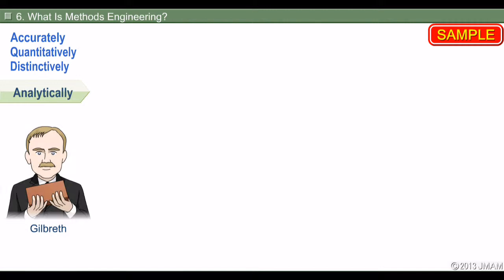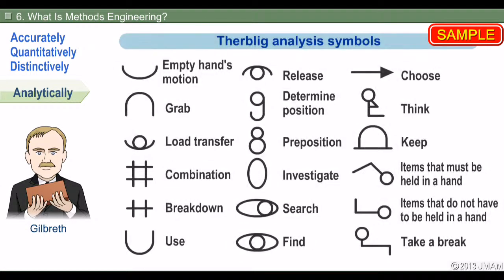Gilbreath broke down the entire bricklaying work into 18 motions. Seeing and thinking analytically refers to reviewing procedures with meticulous detail. By doing so, you can find unnecessary motions.